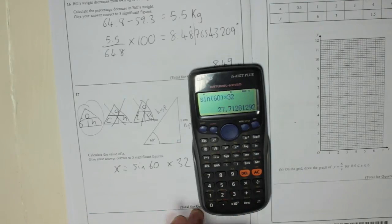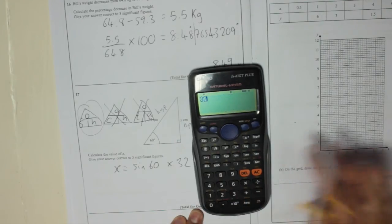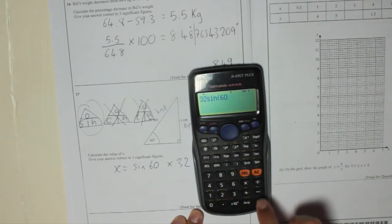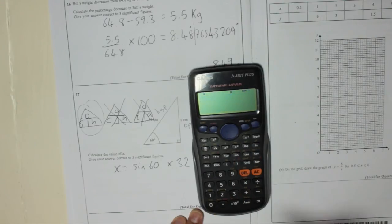Another way of doing it is doing the 32 first. I can do 32 sin 60, close the bracket, and that gives me the same answer.